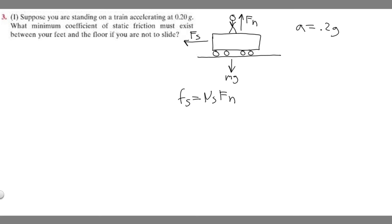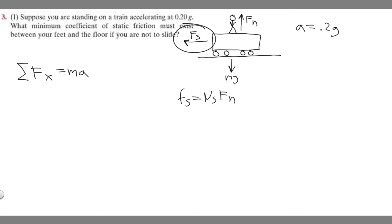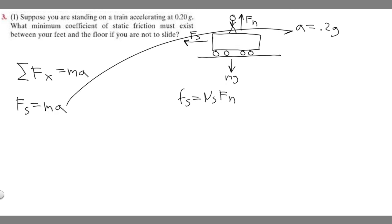What we want to do first is find the sum of the forces in the x direction. We know the sum of the forces in the x direction is equal to m times a. The only force acting in the x direction is our static friction force, so F sub s is equal to m times a. We know a is 0.2g, so it's going to be m times 0.2g.